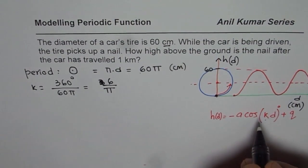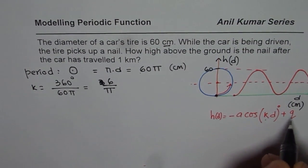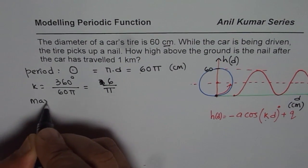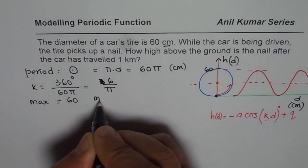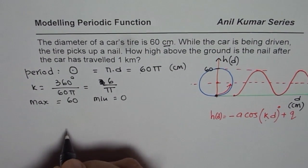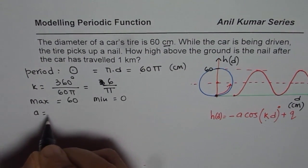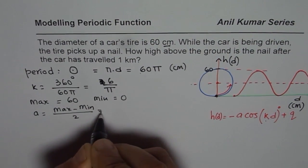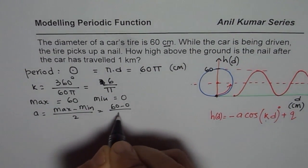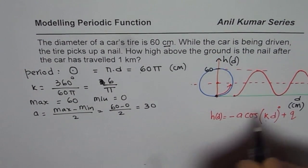Now, that is a k value. To find A and q, we will begin by writing maximum and minimum. Maximum is 60 centimeters. Minimum for us is 0. So A, which is difference of maximum minus minimum, divided by 2, that gives us 60 minus 0 divided by 2, that is 30.